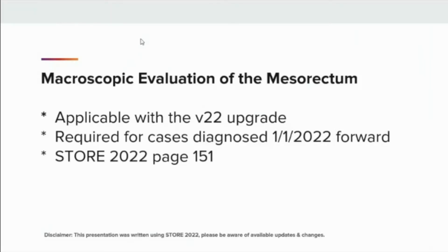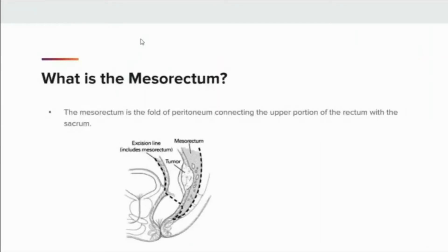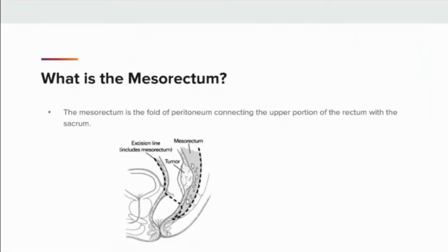First, let's look at what is the mesorectum. The mesorectum is the fold of peritoneum connecting the upper portion of the rectum with the sacrum. As you recall from your anatomy and physiology, the sacrum is a triangular bone formed by the union of five sacral vertebrae, as shown here in the image.